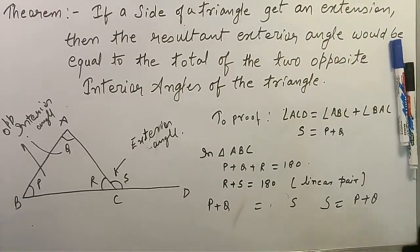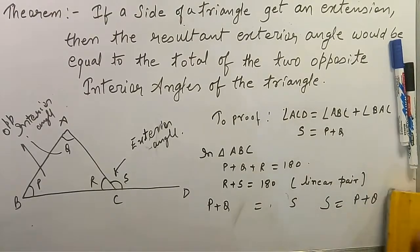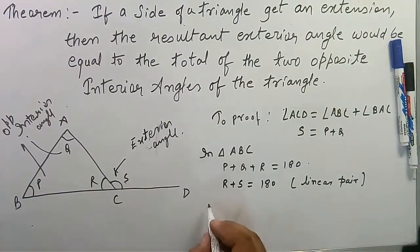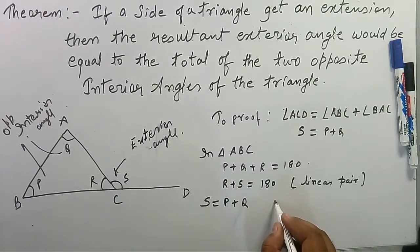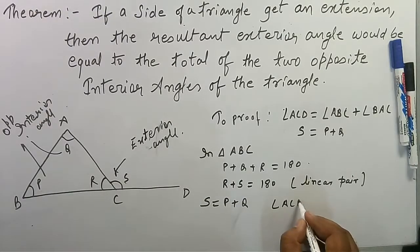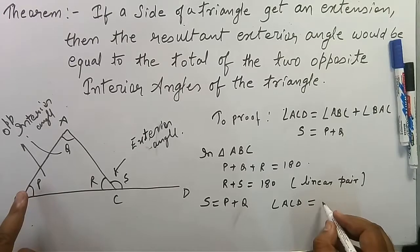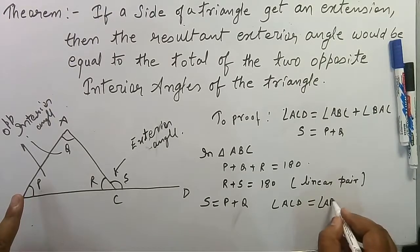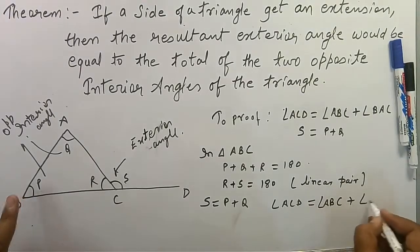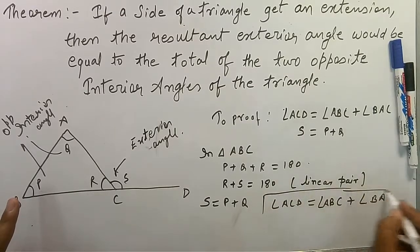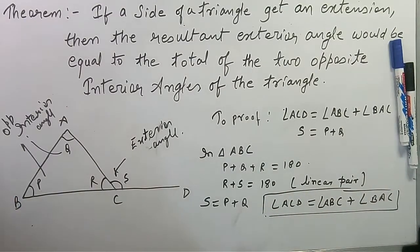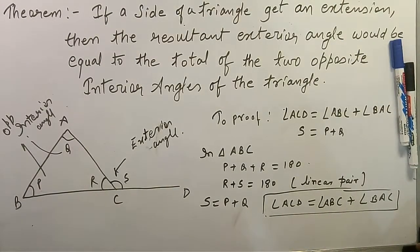What is S? S is angle ACD. This equals angle ABC plus angle BAC. This completes the proof of the Exterior Angle Theorem.